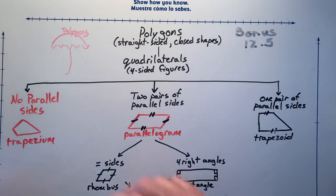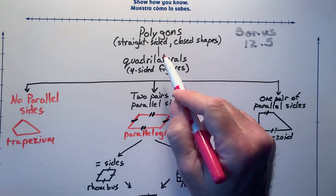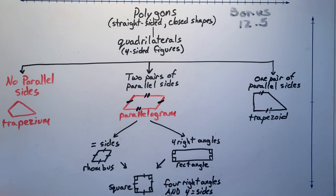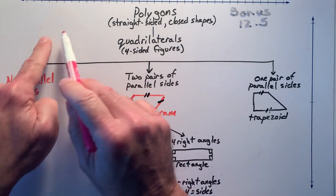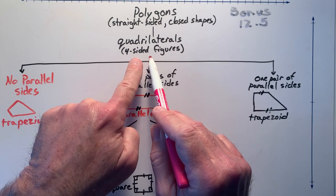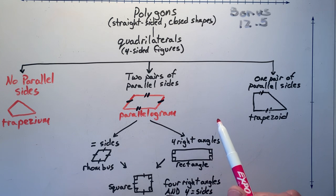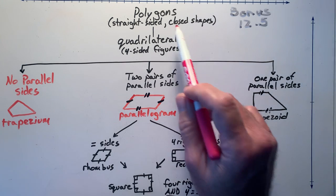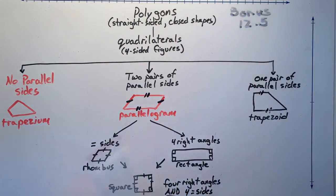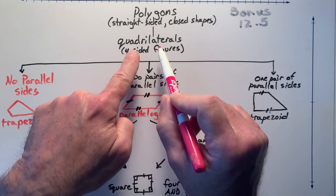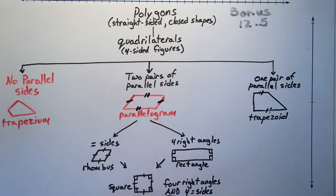Everything that we're going to talk about relates to polygons. As we go from polygons, one type of polygon is a quadrilateral. I could also draw triangles, because triangles are three-sided shapes. Quadrilaterals are four-sided figures. And going further, I could say pentagons, hexagons, octagons, decagons, dodecagons, and so forth — a branch for each different shape. Today I just want the quadrilaterals branch.